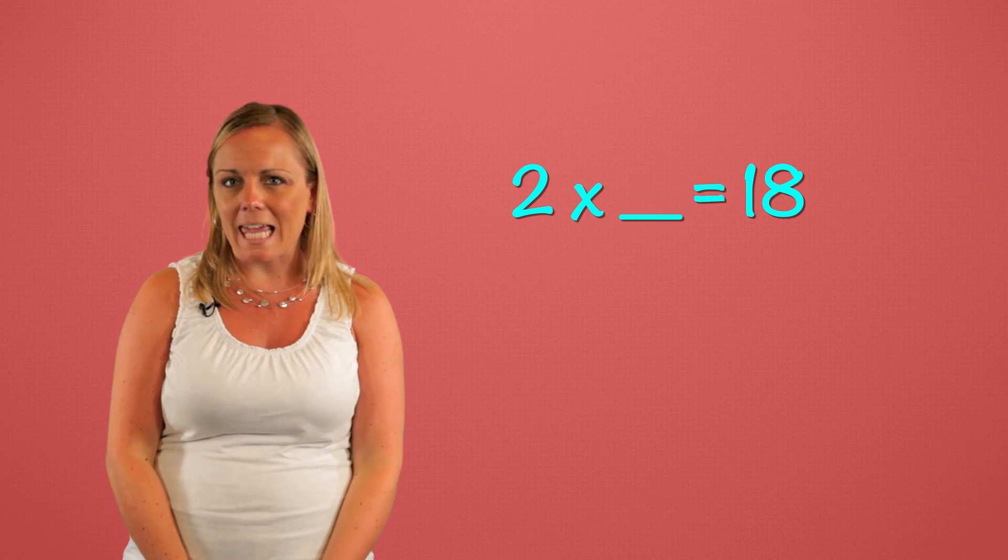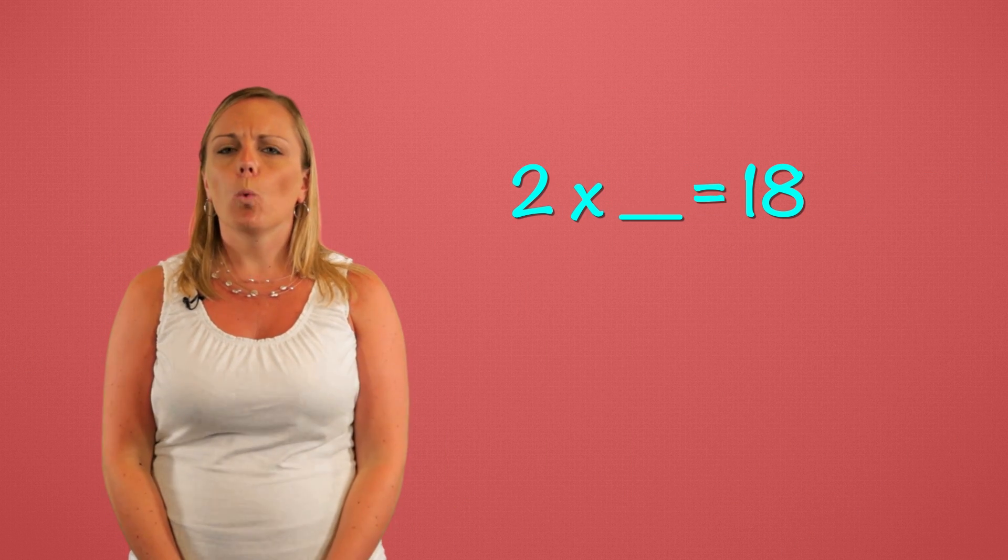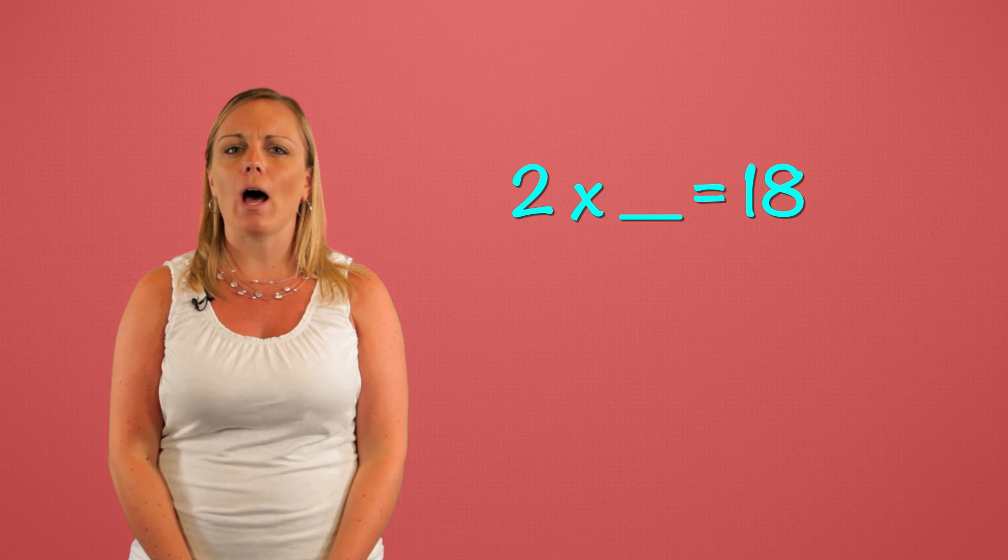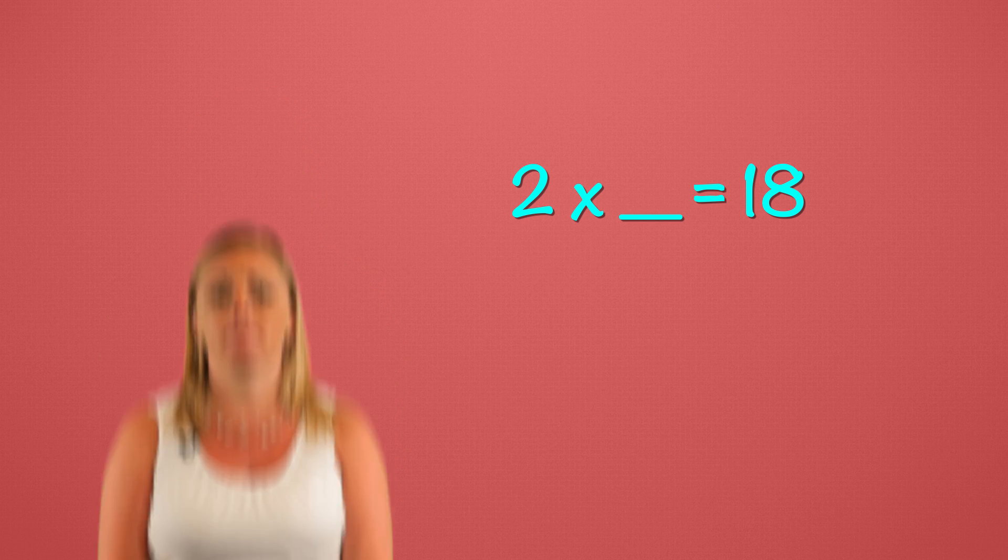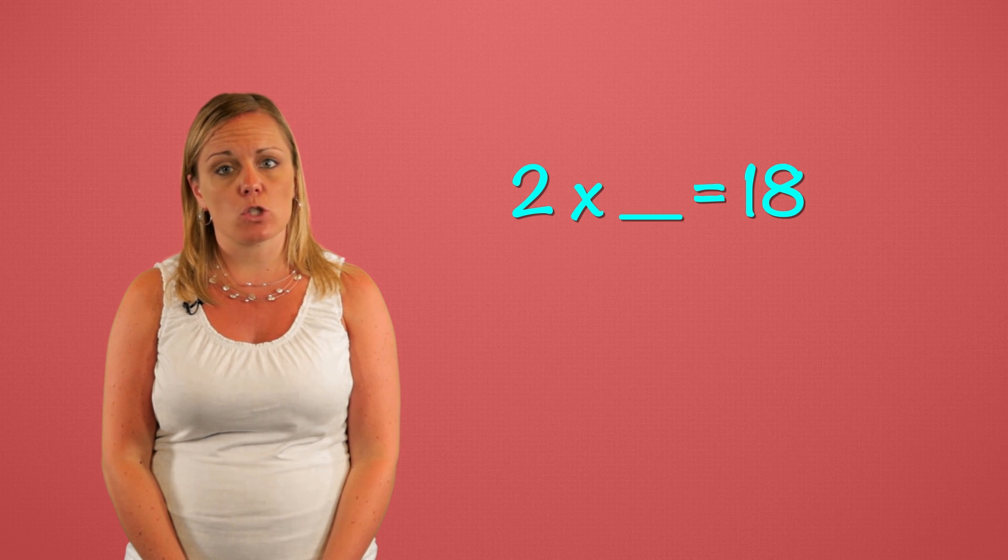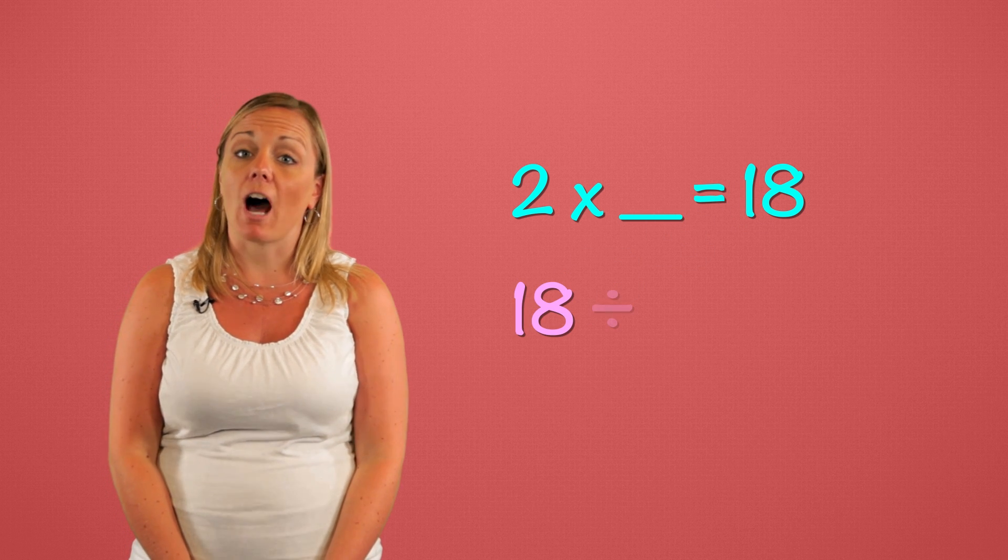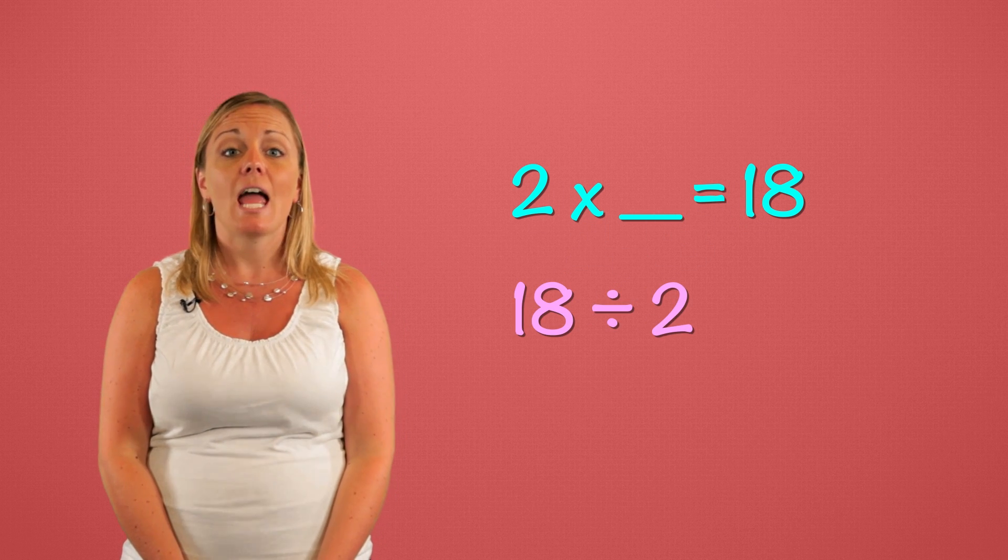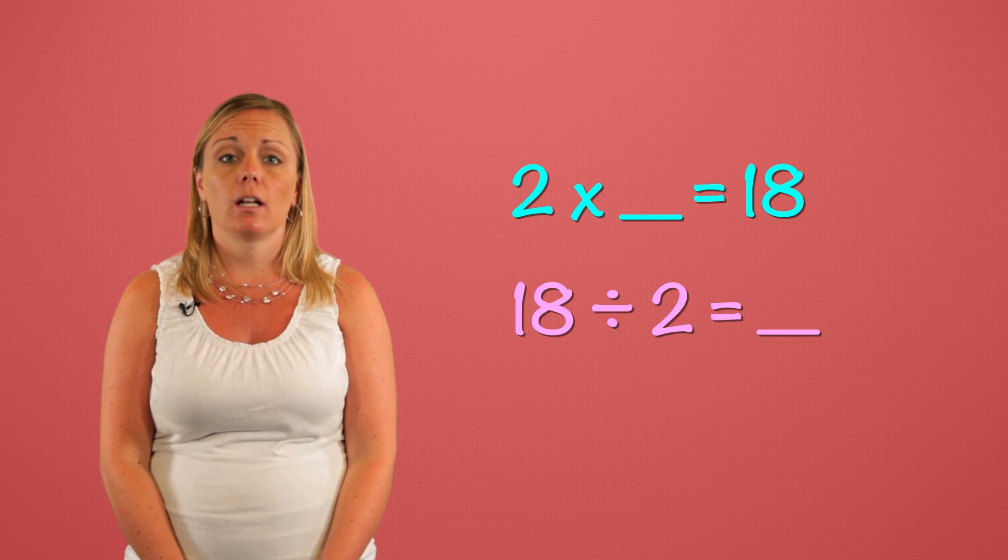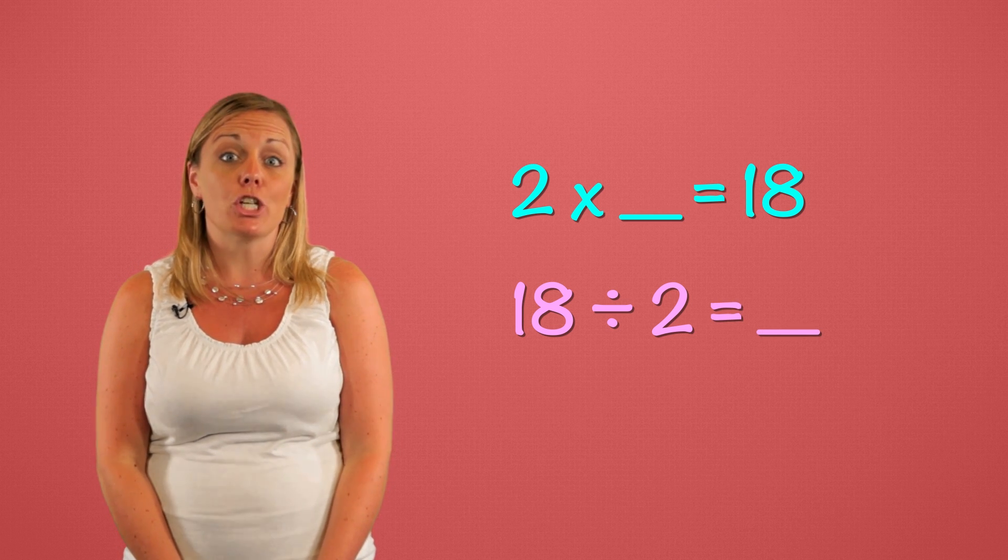Now look at this one. Two times blank equals 18. Which number sentence would help us find the missing number? To find the division sentence we start with the total. Divide the total by the known factor and then solve for the quotient. 18 divided by two equals nine.